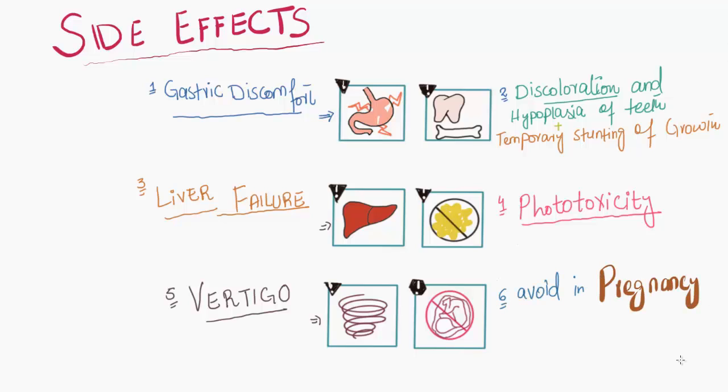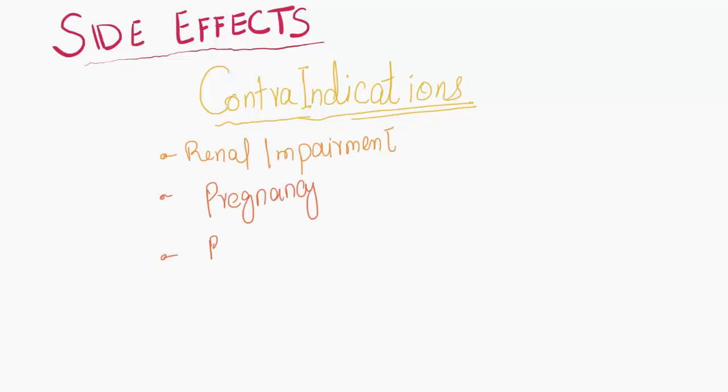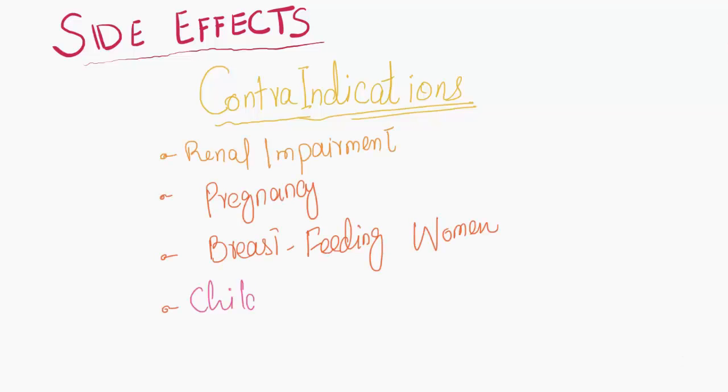Contraindications of using tetracyclines include renal impairment, pregnancy, breastfeeding women, and children less than eight years of age.